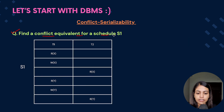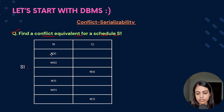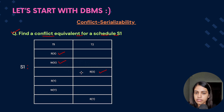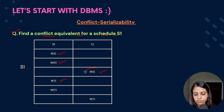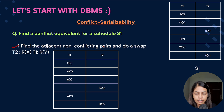Let's solve a question to find the conflict equivalent for a given schedule S1. We have to find the non-conflicting pairs and swap them, then check again for any remaining non-conflicting pairs and swap again, until no more non-conflicting pairs exist. In the schedule: read X and write X, with read X also present — there is a write-read conflict on X. Then read X and read Y — these are non-conflicting operations since the data items differ.